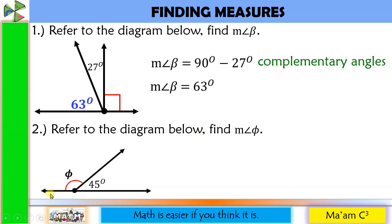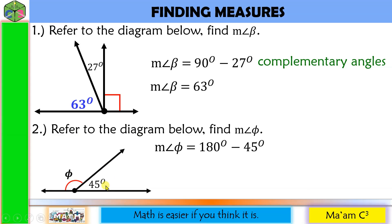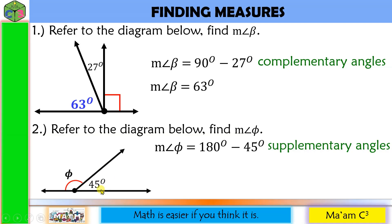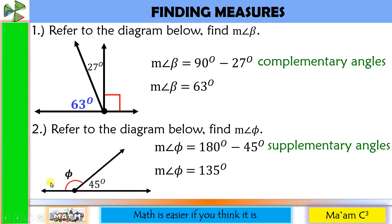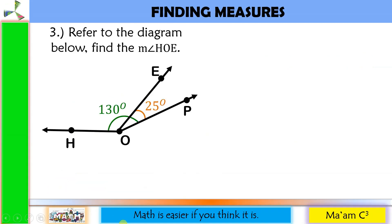Number 2: Once again, a straight line creates 180 degrees. So to solve for angle phi, we just have to subtract 45 from 180, because phi and 45 degrees are supplementary angles. 180 minus 45 gives us 135. So angle phi is 135 degrees.